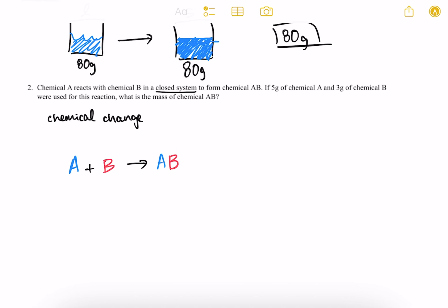nothing has been lost to the environment. So the five grams of chemical A and the three grams of chemical B that we started with have just combined to form eight grams of chemical AB.